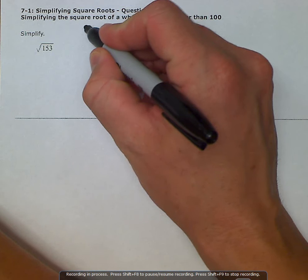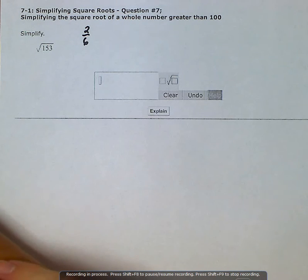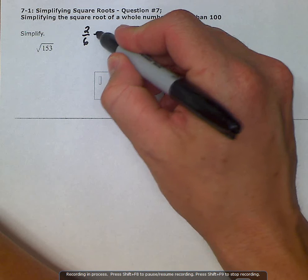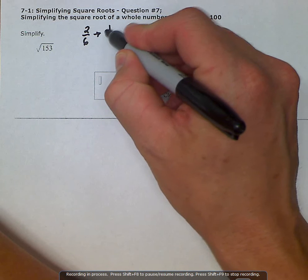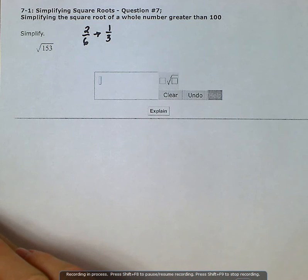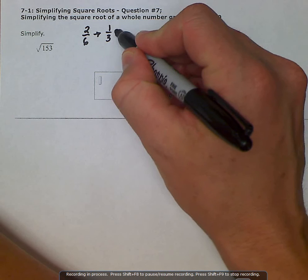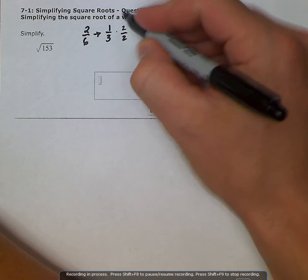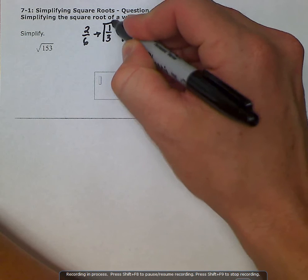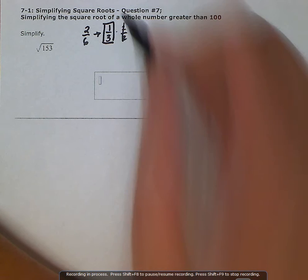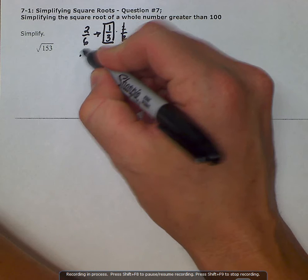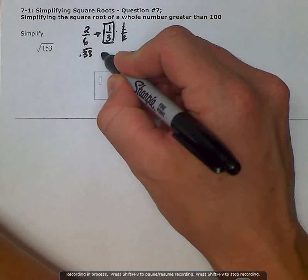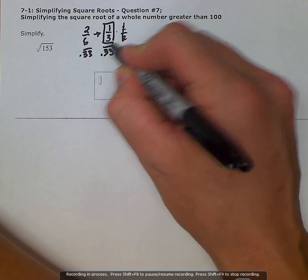For example, if we had the fraction 2/6, we wouldn't leave it as 2/6. Simplified would be 1/3 as we pull out a 2 from both. If we pull out a 2 from our 2 and a 2 from our 6, 2 over 2 is 1, and we reduce this down to 1/3. It's equivalent; they're both 0.33 as a decimal form, but this is our simplified version.